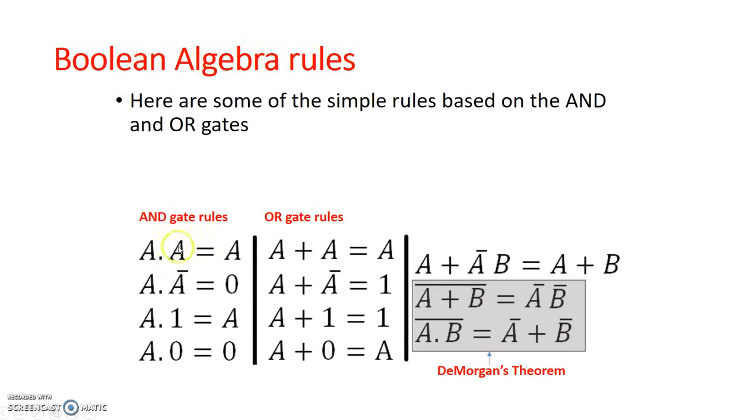Here are some Boolean algebra rules. These rules are based on the AND gate logic. Here are my AND gate logic rules, and here are my OR gate logic rules. These rules are fairly simple. There are a few additional rules that are useful. This rule is also sometimes called the Observation Rule, which states A or NOT AB is equal to A or B. And then the following two rules are called De Morgan Theorem.